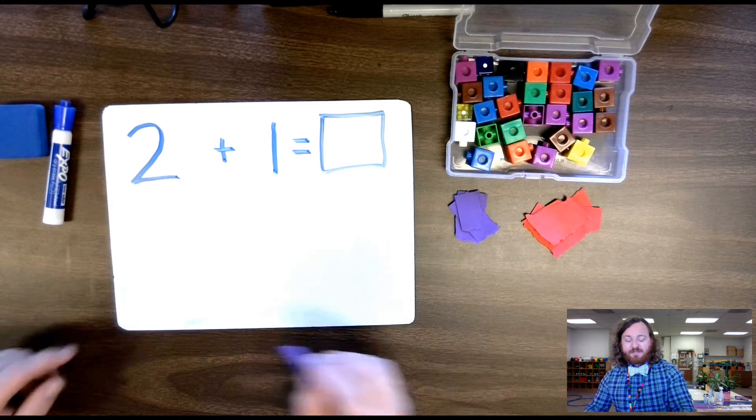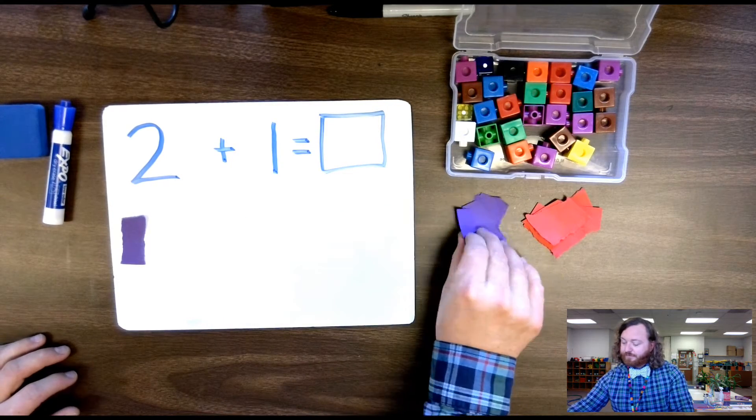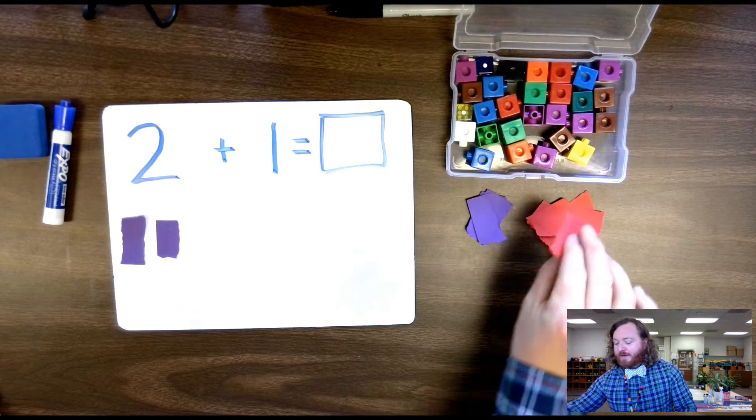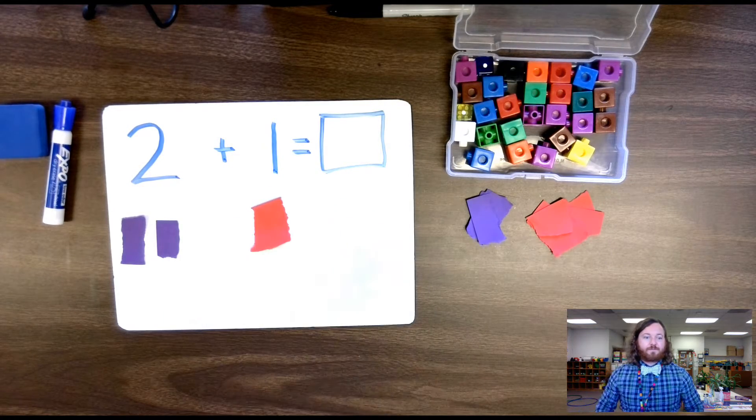For my two, I need to show two pieces of paper. One, two. And then for my one, I need to show one piece of paper. One.